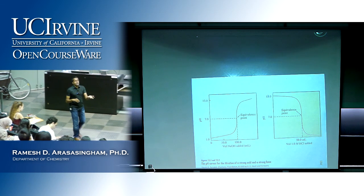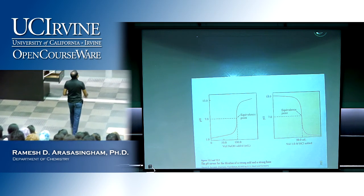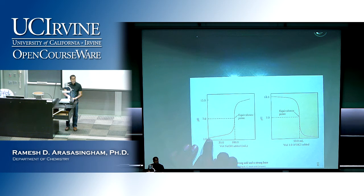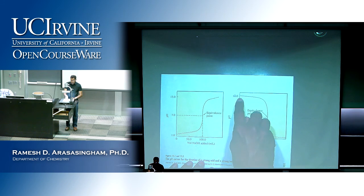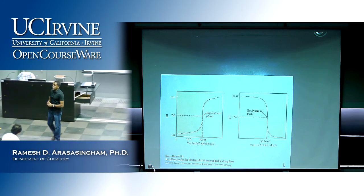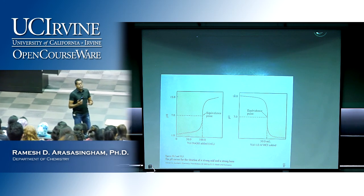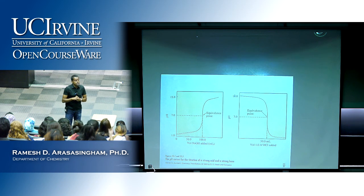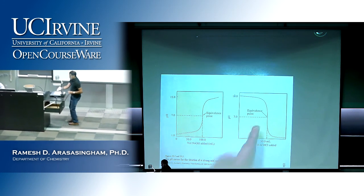If you have a strong acid in the flask, before you add any titrant, the pH starts at 1. If instead you have a strong base like 0.1 molar NaOH in the flask, the pH before adding any titrant would be 13, because the hydroxide ion concentration is 10⁻¹, so the hydronium ion concentration is 10⁻¹³, giving a pH of 13. The curve for the base in the flask is actually a mirror image of the acid curve.